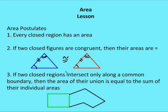Number three: if two closed regions intersect only along a common border or boundary, then the area of their union is equal to the sum of their individual areas. So if this was closed region one and this was closed region two, and they only share a common boundary, then the area of one plus two is going to be equal to the area of this entire figure — the green figure plus the black figure.